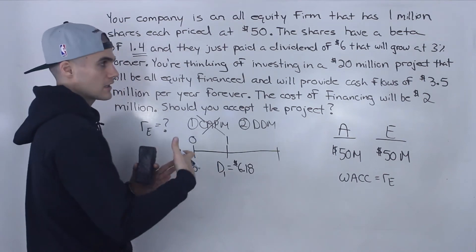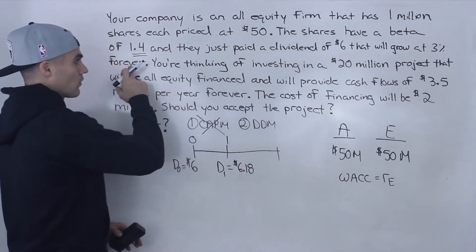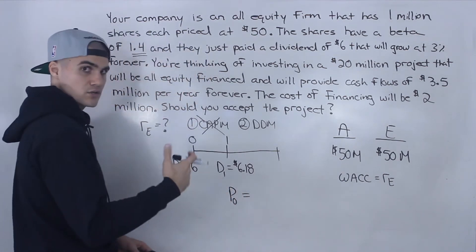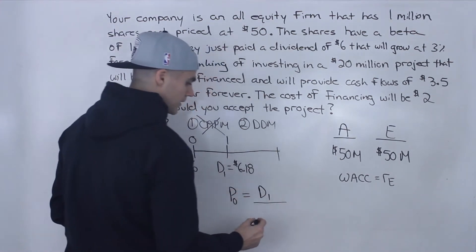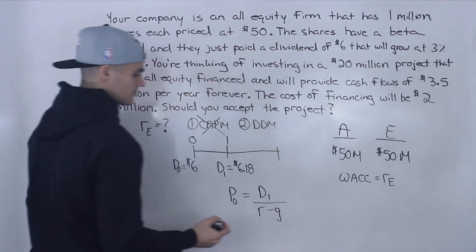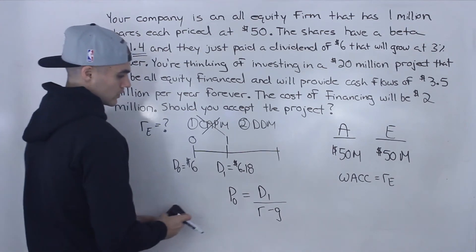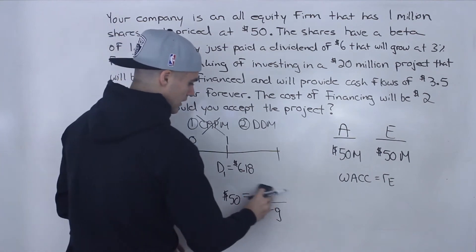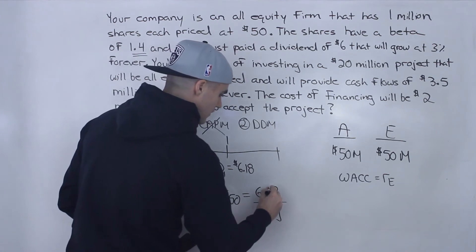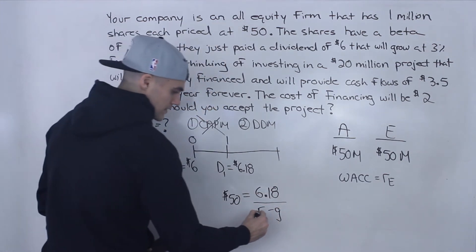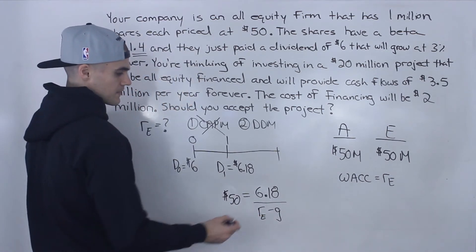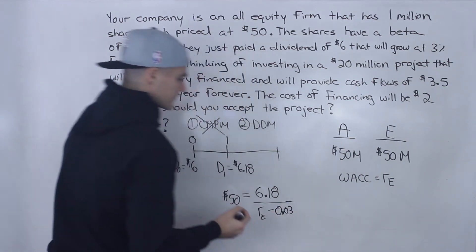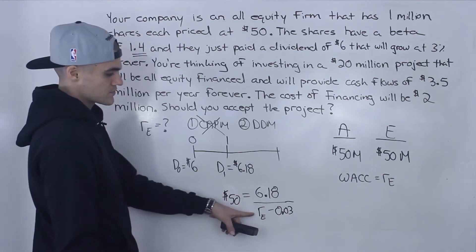Using the Gordon Growth Model, the share price equals D1 divided by (R minus G). We know the price is $50, D1 is $6.18, G is 3%, and R is what we're solving for. So: $50 = $6.18 / (RE − 0.03). We now have one equation with one unknown — the return on equity.